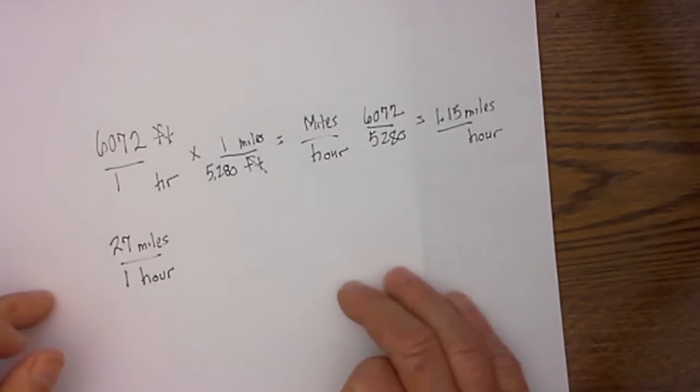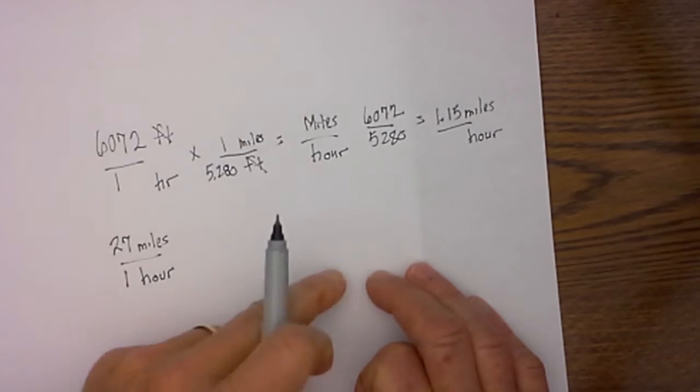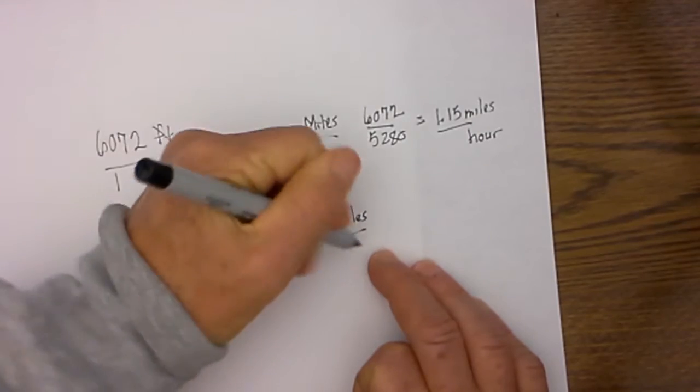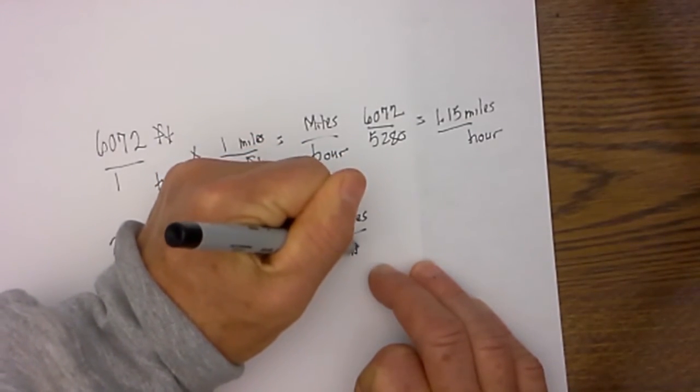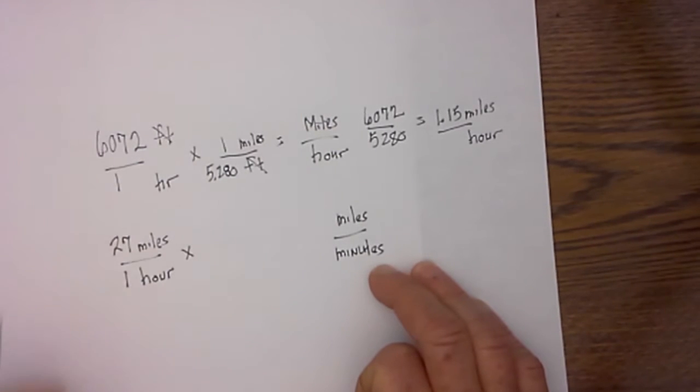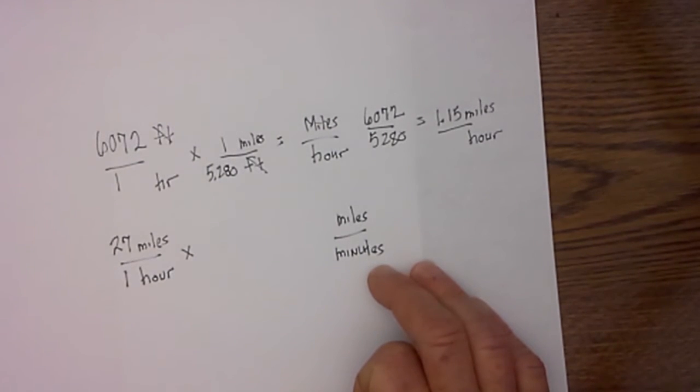And now I would like to know, okay, how far am I going to run in a minute? So I'm going to write my goal down, and that is miles in a minute. And then I ask myself, okay, which unit of measure do I need to get rid of?